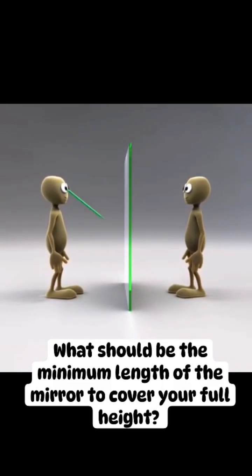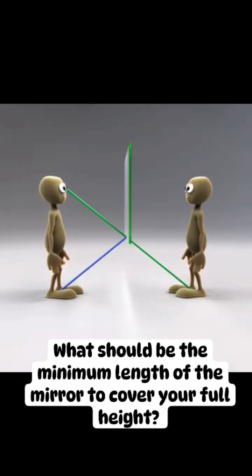We can trace out a line from your eye to where the bottom of your feet appear in the reflection. The point where that line intersects the mirror is the part of the mirror that is reflecting your feet back to your eyes. To see your full reflection, we don't need any part of the mirror below that point.